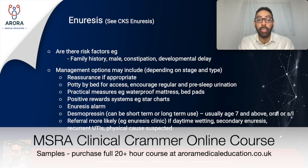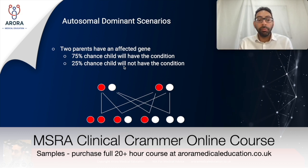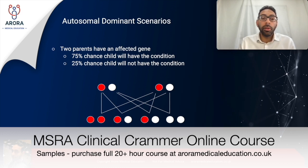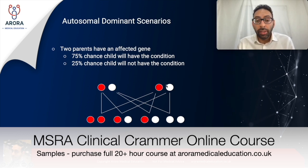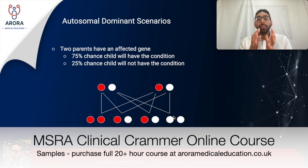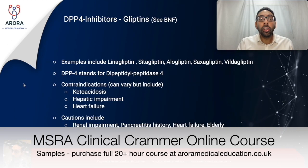In autosomal dominant conditions, if both parents have the affected gene — meaning both parents have the condition — the chance that a child will have the condition rises to 75%, as the child will have at least one affected gene. There is a 25% chance the child will not have the condition, which occurs only when the child inherits the unaffected gene from both parents.